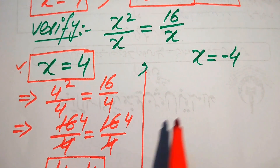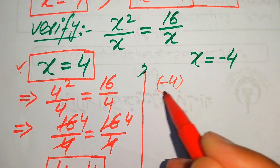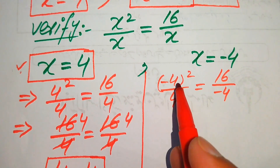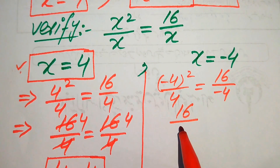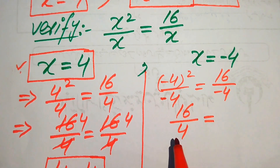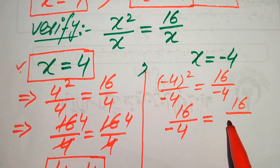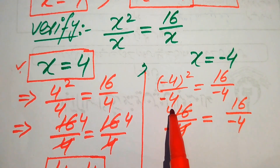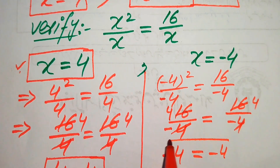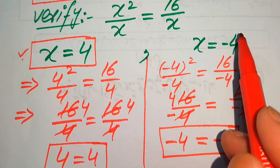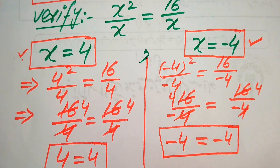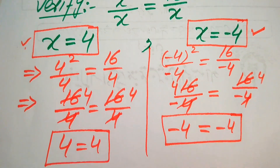Substituting x equals minus 4: we get (minus 4) squared divided by 4 equals 16 over minus 4, which gives 16 over 4 equals 16 over minus 4, simplifying to minus 4 equals minus 4. This confirms that x equals minus 4 also satisfies the given equation and is a valid solution.